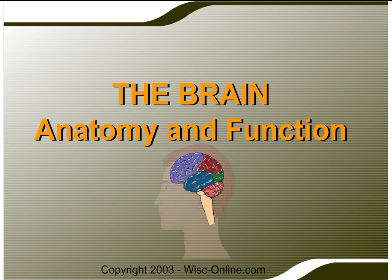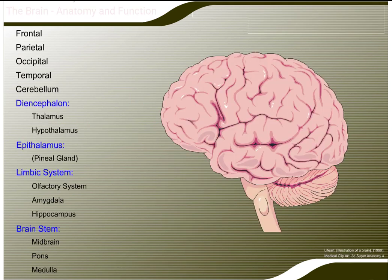Brain anatomy and function. The brain is made up of several specialized areas that work together. Let's review those areas of the brain.